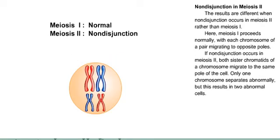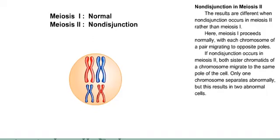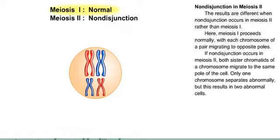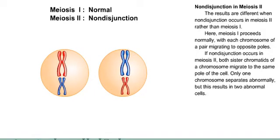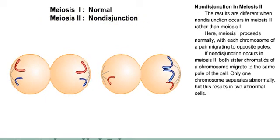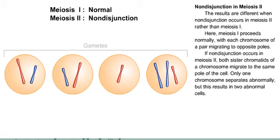The results are different when non-disjunction occurs in meiosis II rather than meiosis I. Here, meiosis I proceeds normally, with each chromosome of a pair migrating to opposite poles. If non-disjunction occurs in meiosis II, both sister chromatids of a chromosome migrate to the same pole of the cell. Only one chromosome separates abnormally, but this results in two abnormal cells.